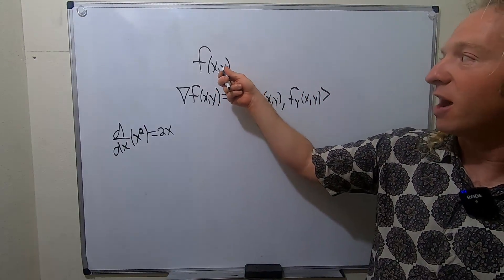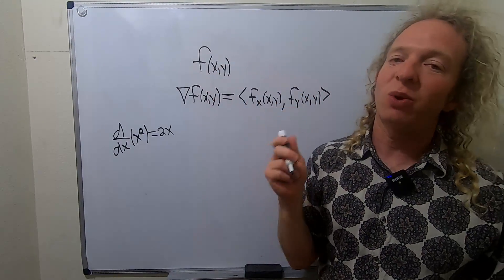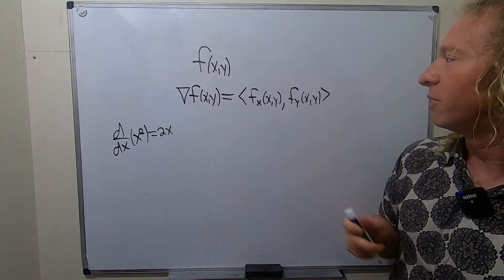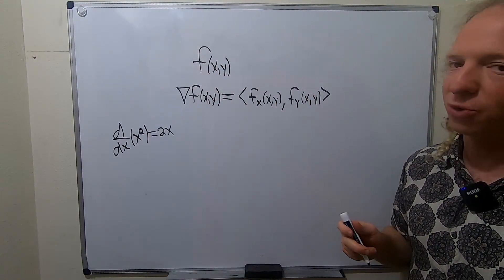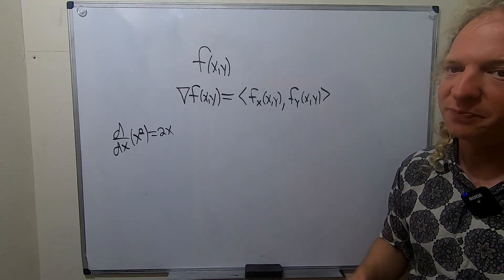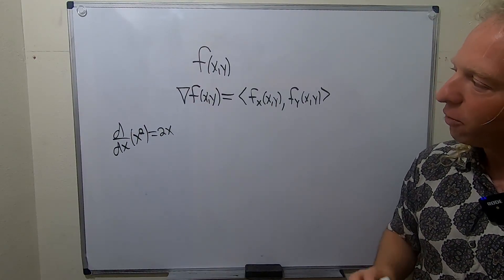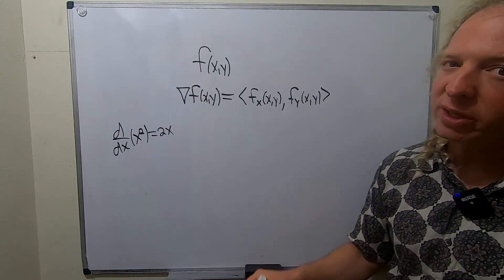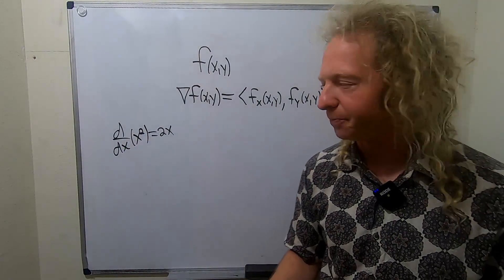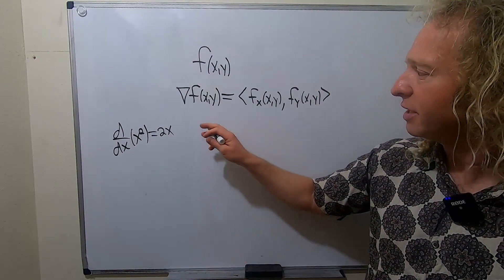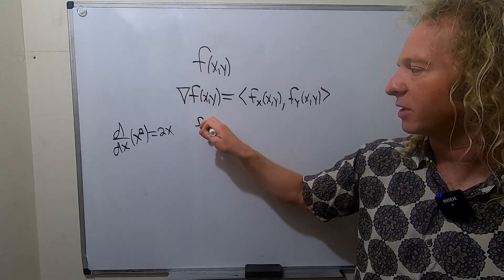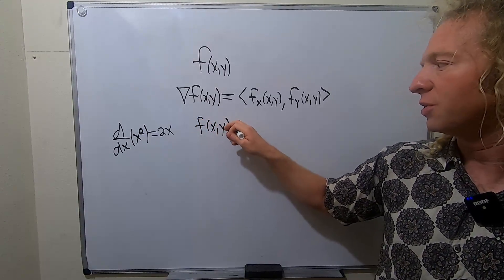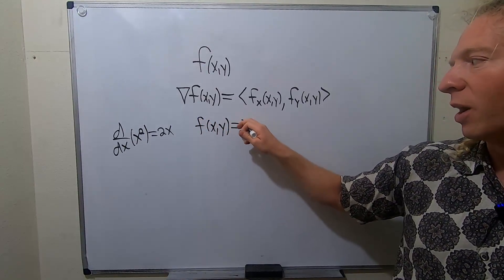If you have f of x, y, z, then your third component would be the partial with respect to z. Before we talk about what it means, let's do a really simple example. Let's say you have f of x, y equals x squared plus y squared.